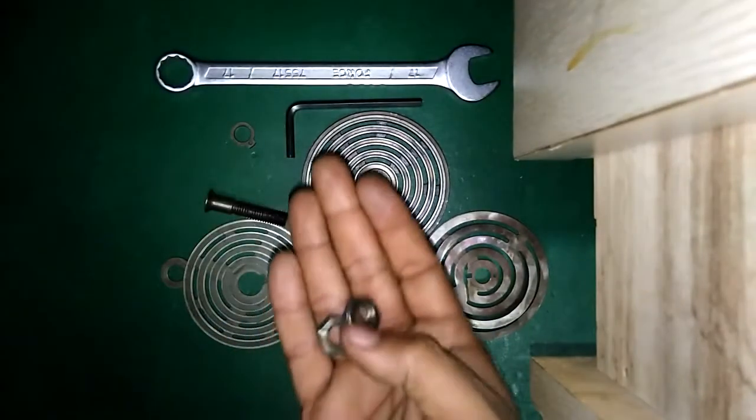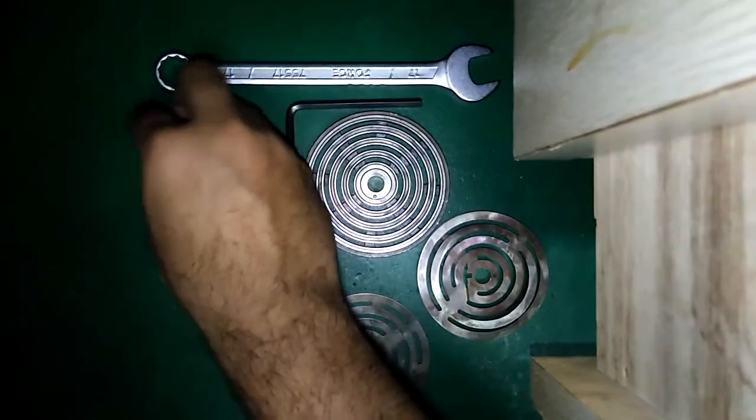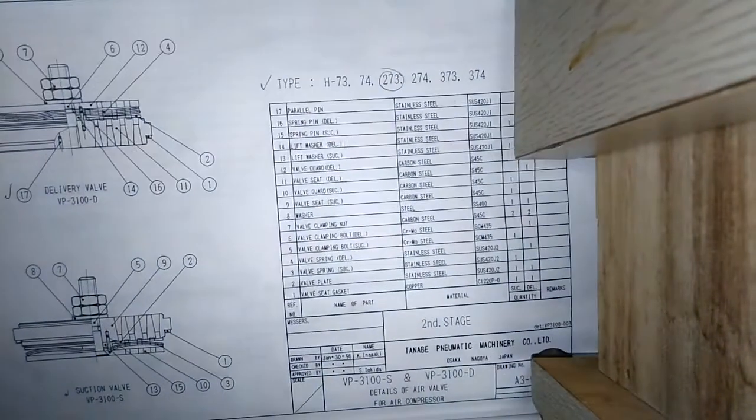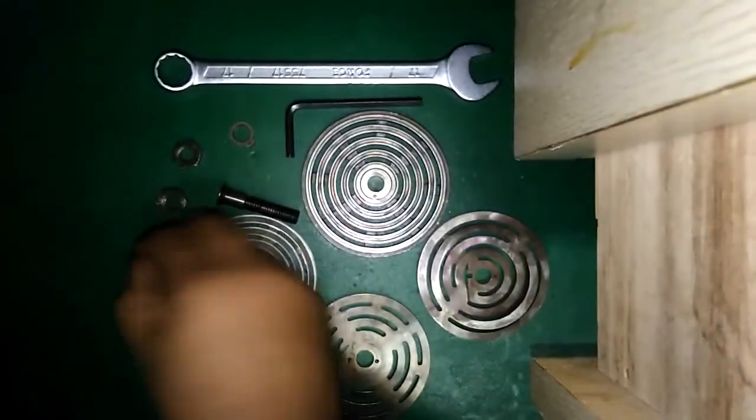Wall clamping nut. These are the two nuts which are used to clamp this valve. Number eight, washer. This is the washer.